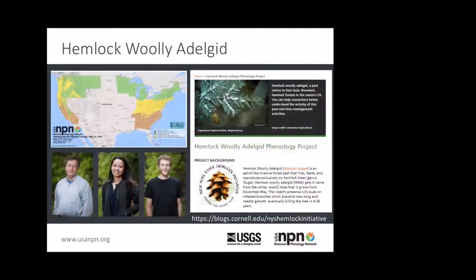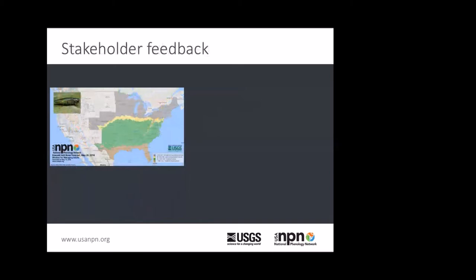Another great example is hemlock woolly adelgid. There's not currently a great phenological model for hemlock woolly adelgid, so we've been working with folks at Cornell who have a hemlock woolly adelgid phenology project — Mark Whitmore, Samita Lumba, and Nick Deescher. They are working with us to develop a data collection campaign through our citizen science program, Nature's Notebook. Rather than telling people exactly when the phases are going to occur, we tell people a broad range of when they should be out looking for eggs and nymphs, so that incoming data can help create and validate the in-progress model development.